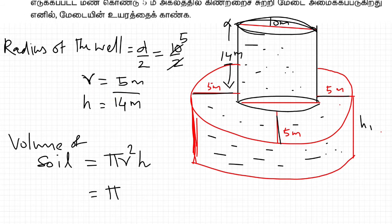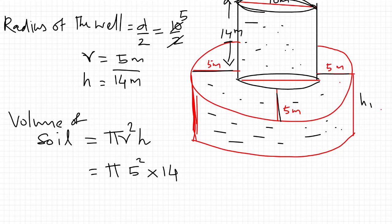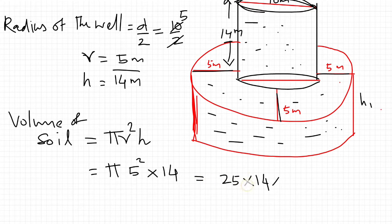r is 5 meter, so volume = π × 5² × 14 = π × 25 × 14 meter cube. This is the volume of soil.